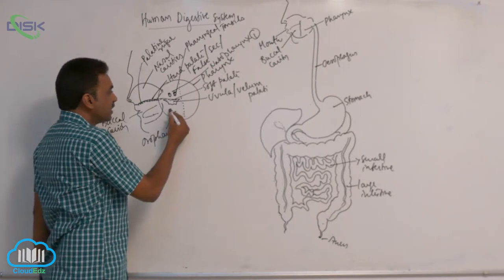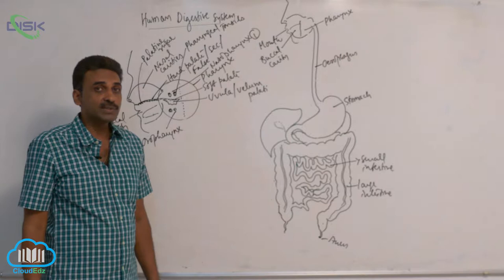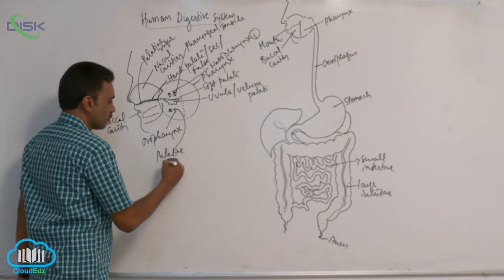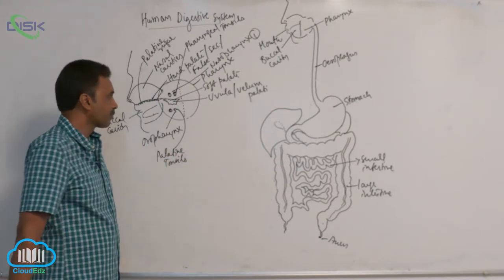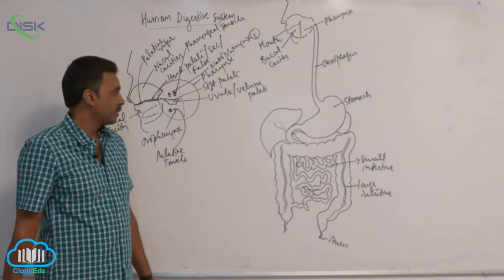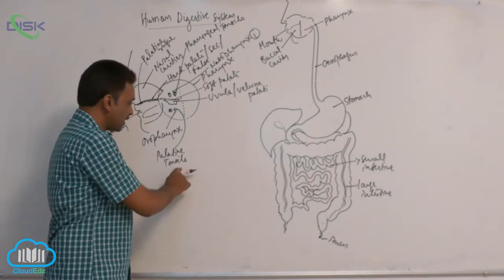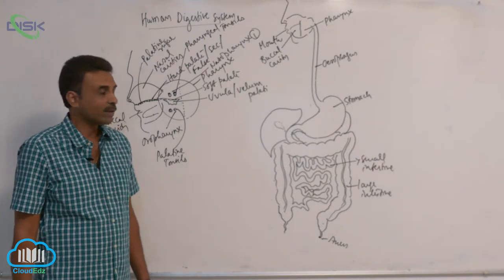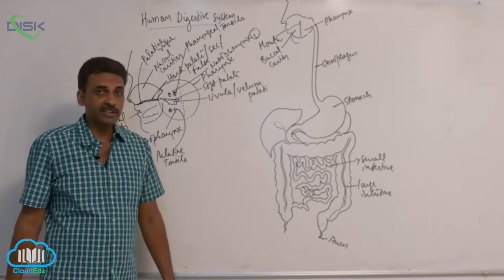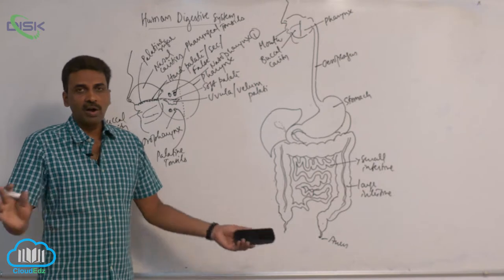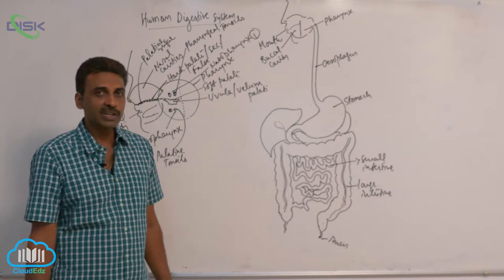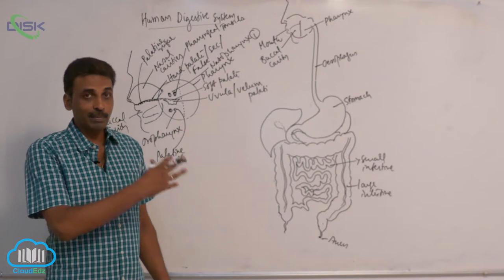On either side of the throat, just beneath the soft palate, you can see tonsils called palatine tonsils. We also discussed lingual tonsils, which are present at the base of the tongue. All tonsils function in immune surveillance — they are aggregations of lymphatic tissue providing immunity in that particular area.